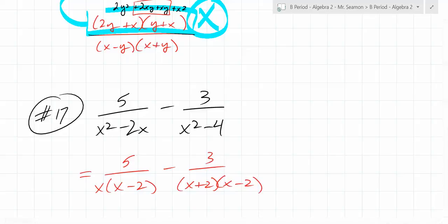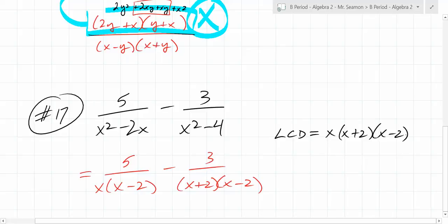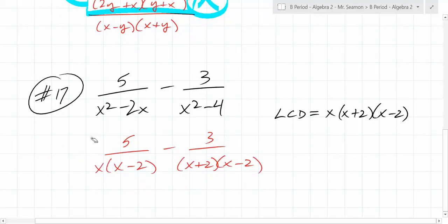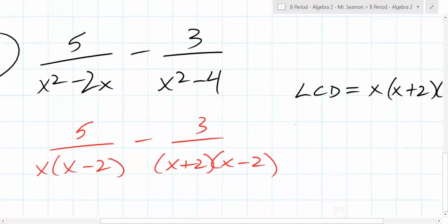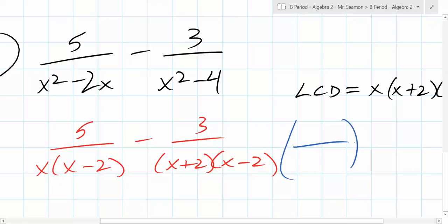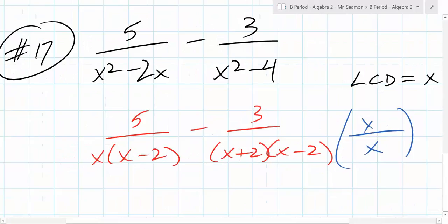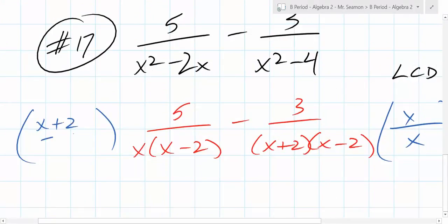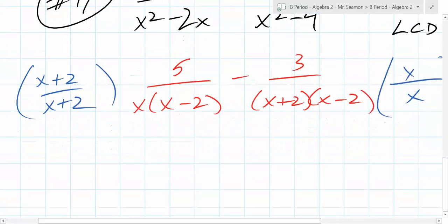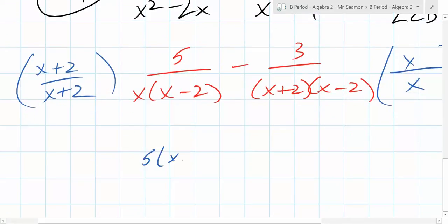Now that we've factored it, what does the LCD become? Can someone who hasn't spoken tell me what the LCD is? Deb, what is it? X minus 3 times X plus 1 times X plus 2 times X minus 2. So if we need to build that, what's missing on this one? What do we need to multiply by here? X plus 2 times X minus 2. And what do we need to multiply over here? X minus 3 times X plus 1.